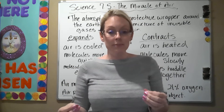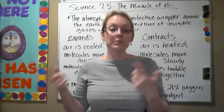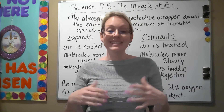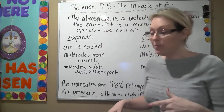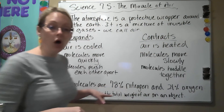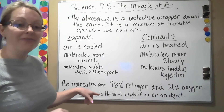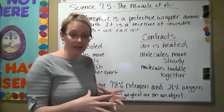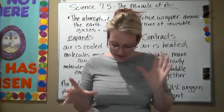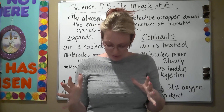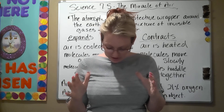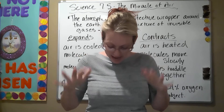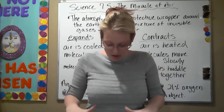There are different layers of the atmosphere and in tomorrow's chapter you're going to learn about those different layers. But one thing you need to know is air pressure. Air pressure is really unique because it is the total weight of air on an object, basically pressing down on an object. Now, 75% of the air is packed down on the bottom layer of the Earth.